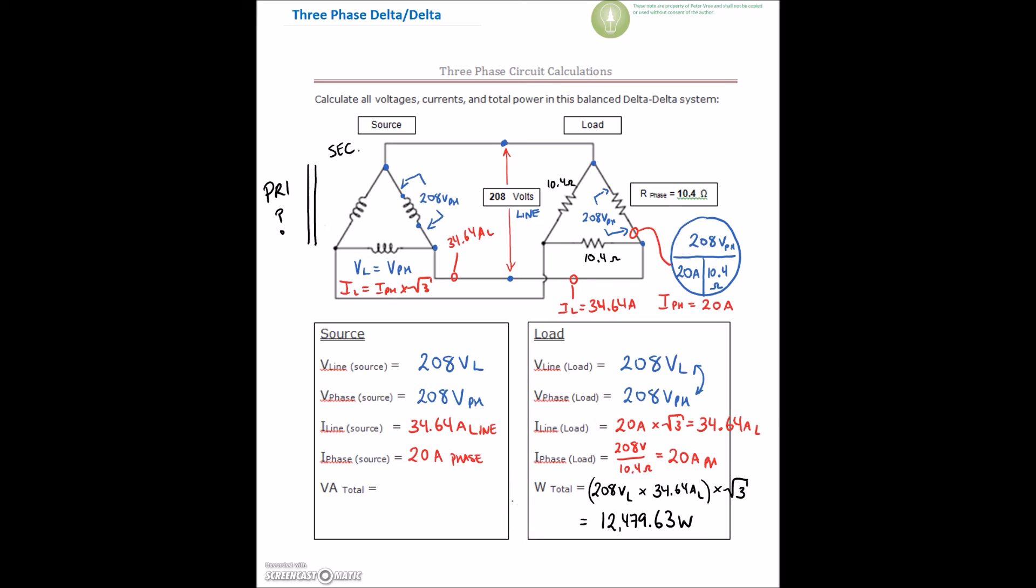So here we could also do our phase voltage, 208 volts on the phase, times our phase current. Our phase current was 20 amps. Multiply those guys by, not root 3. There's three phases, so I've got to multiply those guys by 3.